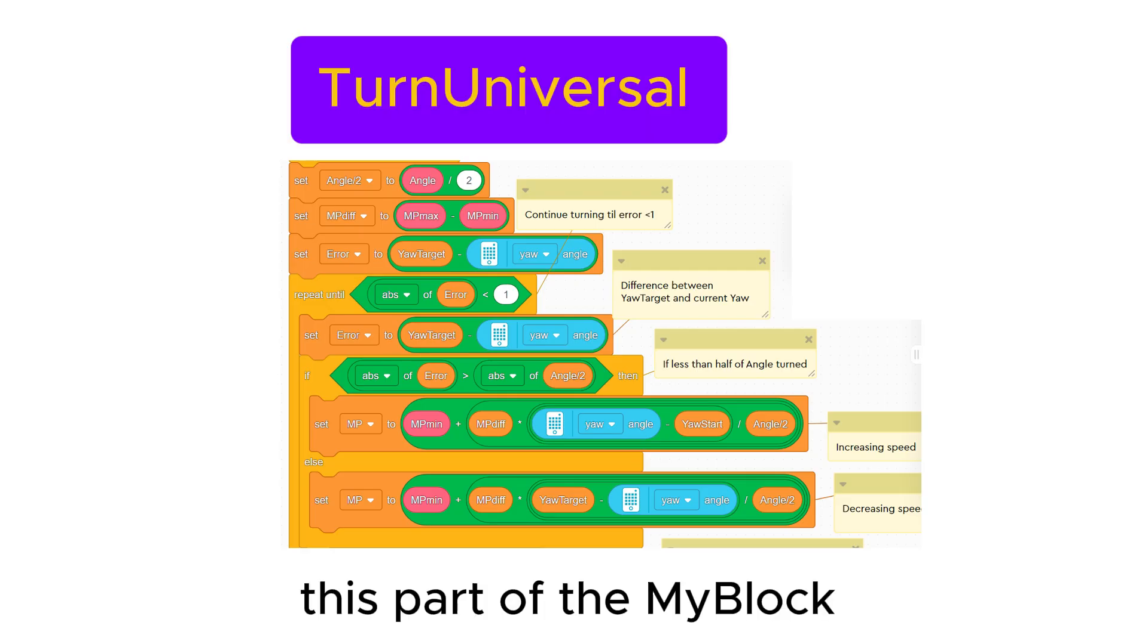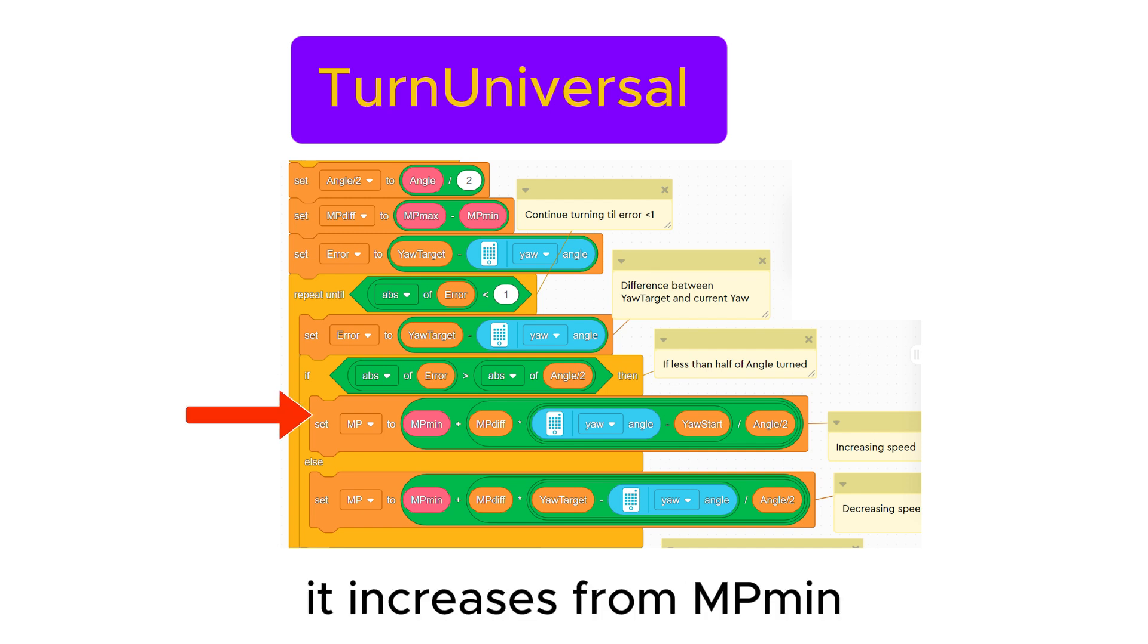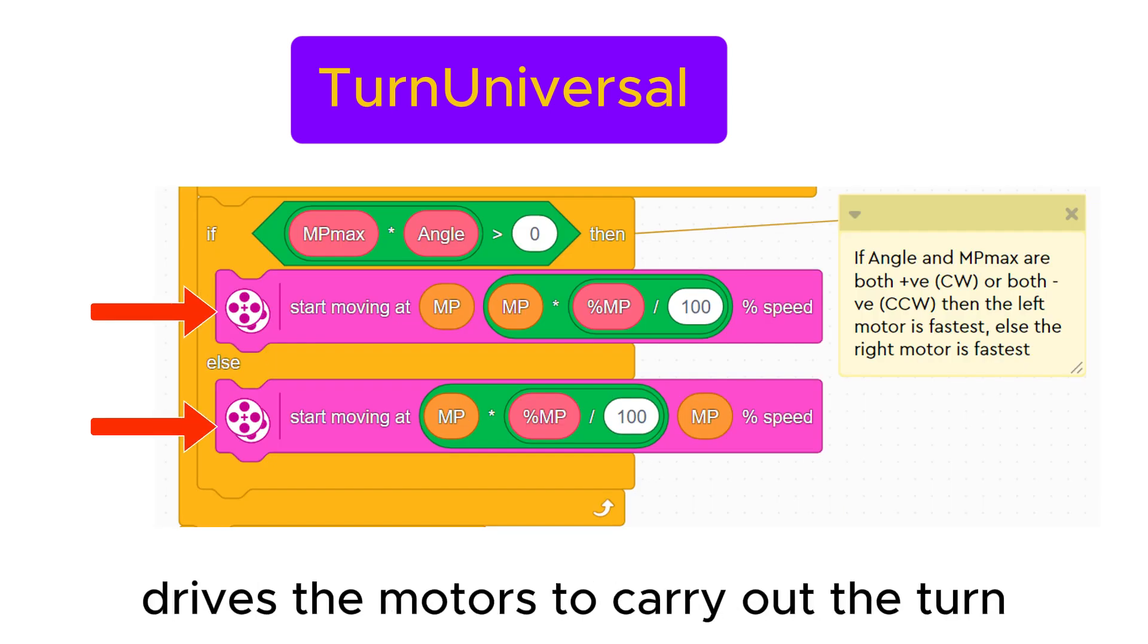This part of the my block calculates the motor speed MP during the turn. It increases from MP min up to MP max at the midpoint, then decreases down to MP min at the end. The last part of the my block drives the motors to carry out the turn.